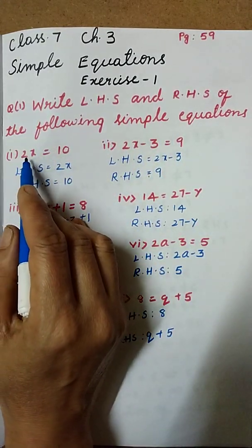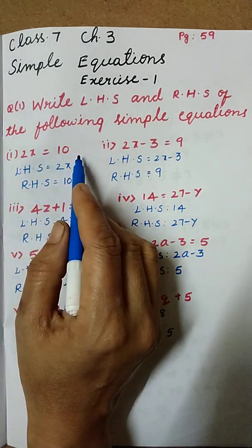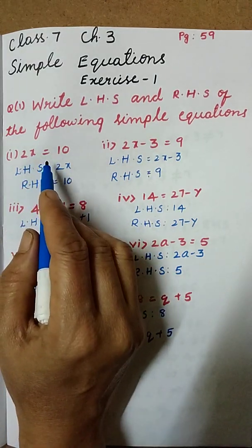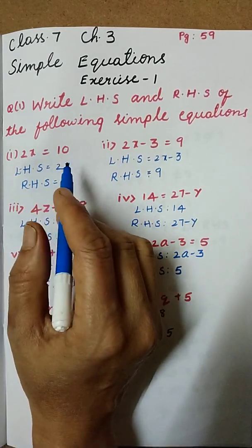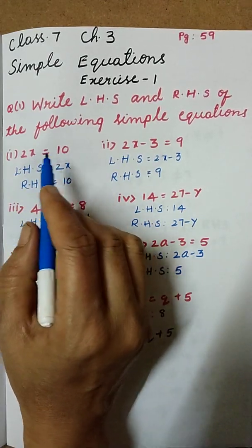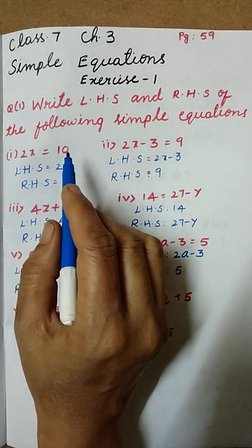Here the first question has given 2x equal to 10. Here we have to find which is the LHS and which is the RHS. First of all, what is the meaning of LHS? LHS means left hand side and RHS means right hand side.